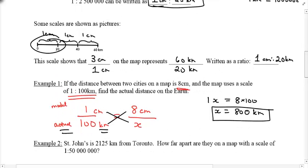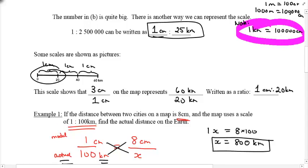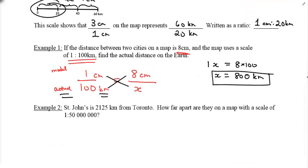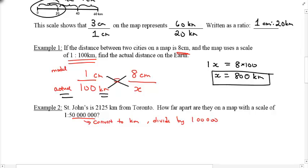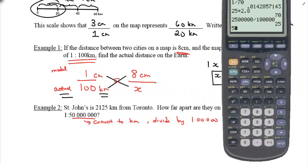Earlier, we said that 1 kilometer is equal to 100,000 centimeters. So if you want to just convert this into kilometers, we will divide by 100,000. You can use a calculator if you wish, or just cross out the zeros, it's up to you, but I'll use the calculator.